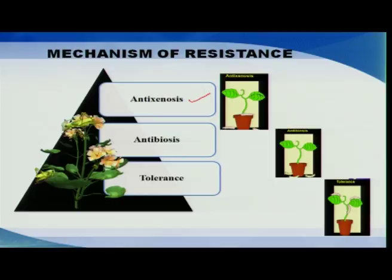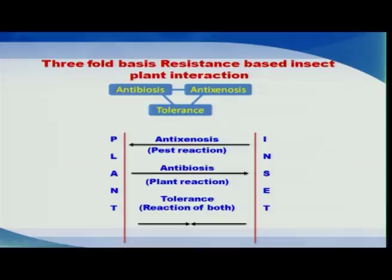There are three major mechanisms of resistance: one is anti-xenosis, the second one is anti-biosis, and the third one is tolerance. Let us look in detail about what these mechanisms are and how they are going to impart resistance in the plants.